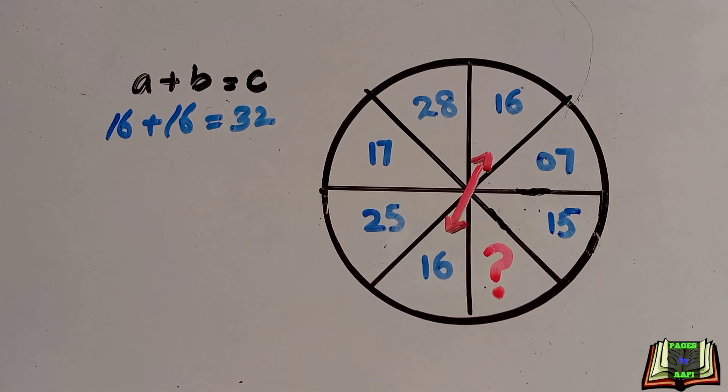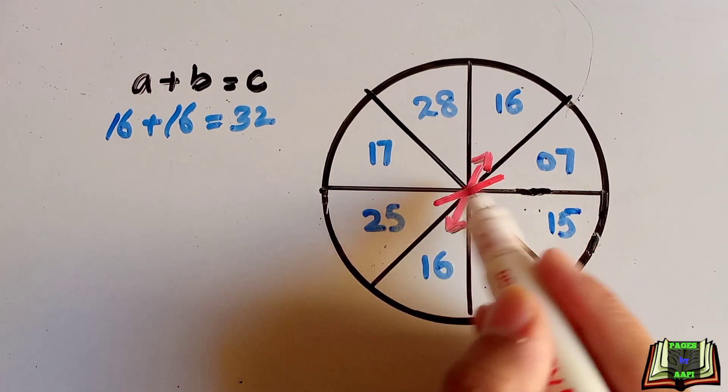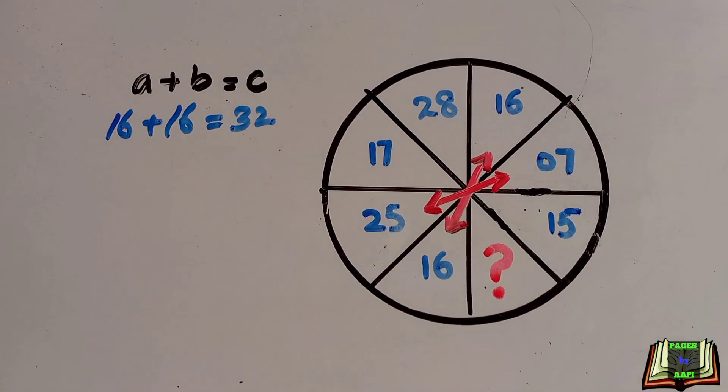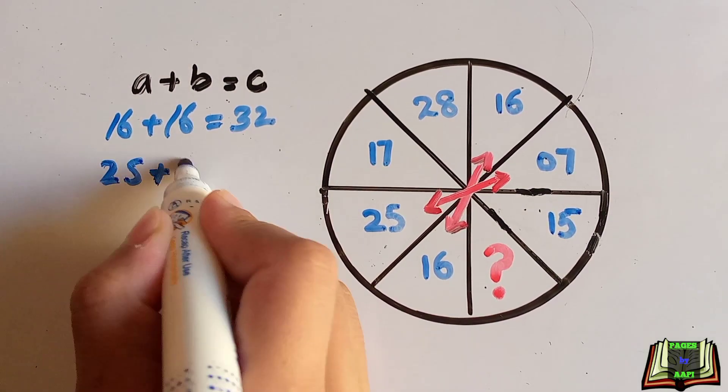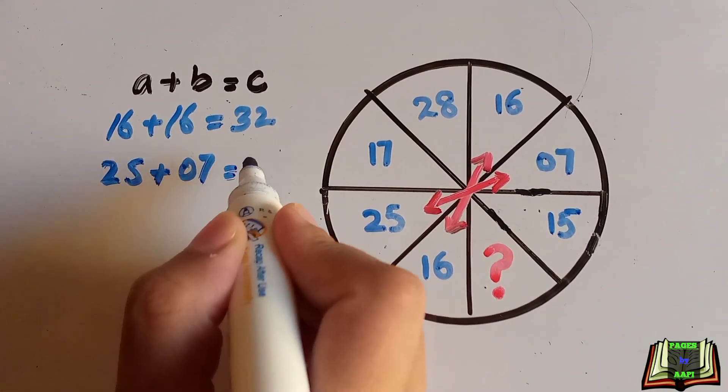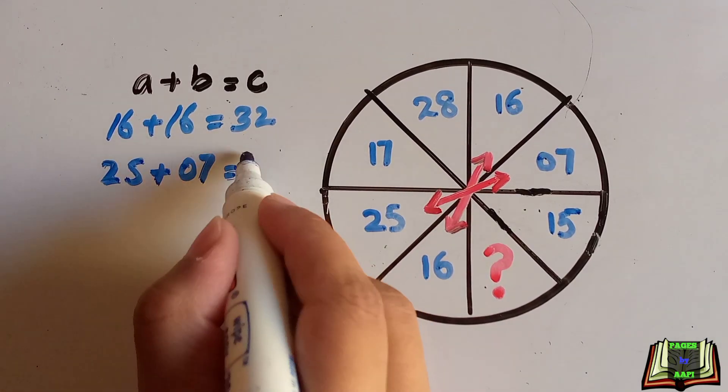So this is the way 16 and 16 are placed here. Now we will see the second one, 25 and 7. Like here, a is 25 and b is 7, and if we add both together it is also the combination of 32.